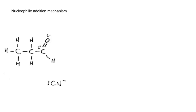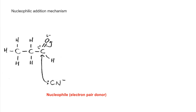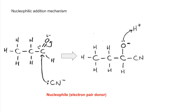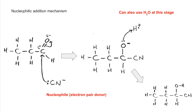Looking at the mechanism for nucleophilic addition: the CN⁻ ion has a lone pair of electrons to donate, acting as a nucleophile. It is attracted to the slightly positive carbon, repelling the pi electron pair up onto the oxygen and generating an intermediate. An H⁺ ion is then brought in to form a bond with the oxygen, giving the final product. It's worth noting that water can also be used at that stage, but doing so produces a hydroxide ion at the end of the mechanism.